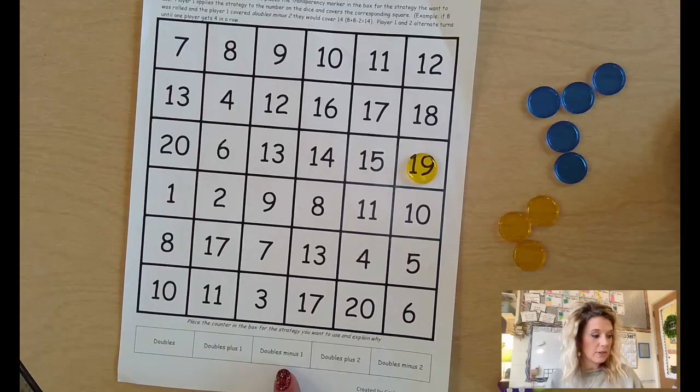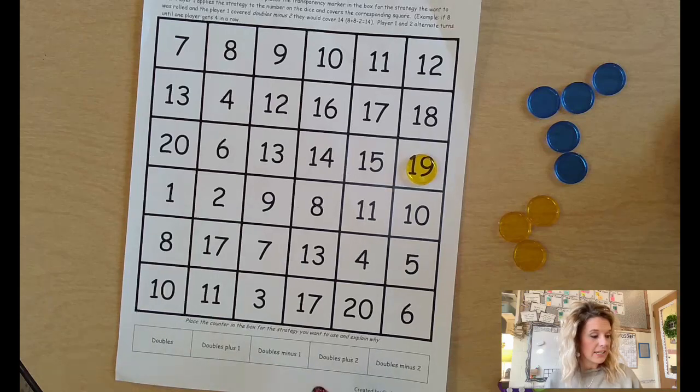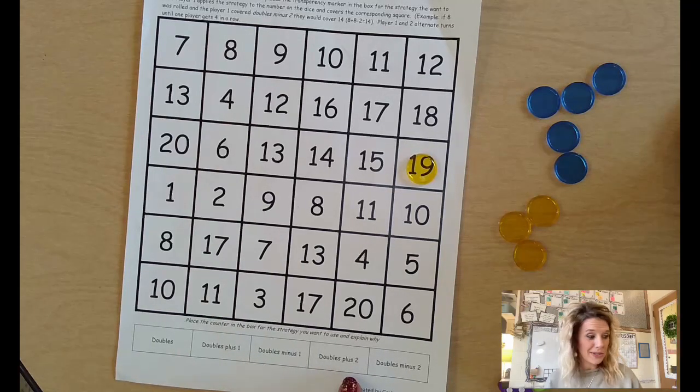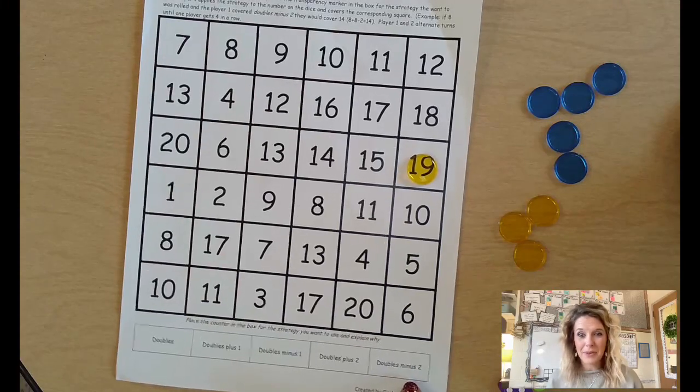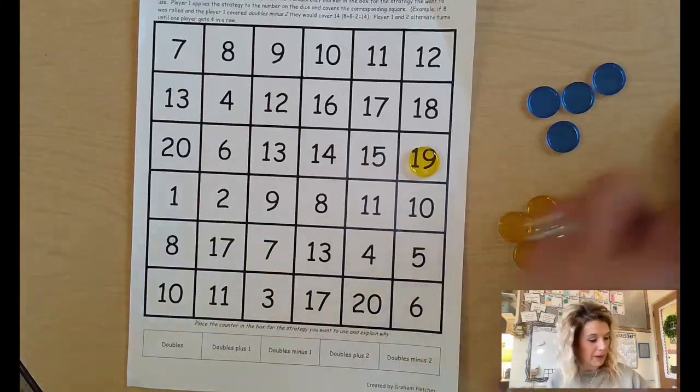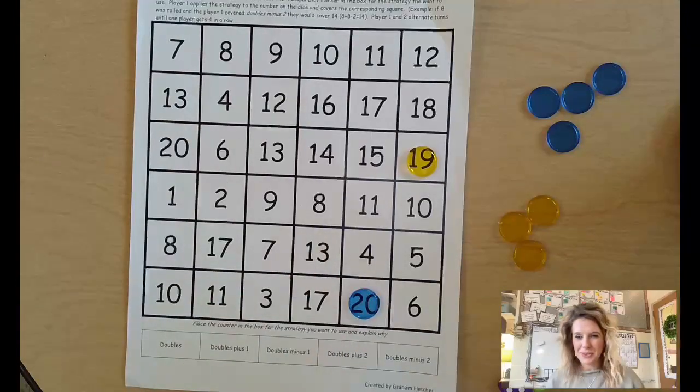Doubles minus one, 21. I don't see it. Doubles plus two, 24. Or doubles minus two, 20. That's the one I want to pick because the other numbers aren't on the paper. So player two will choose 20.